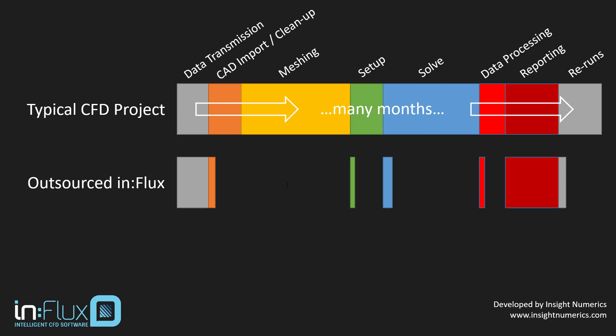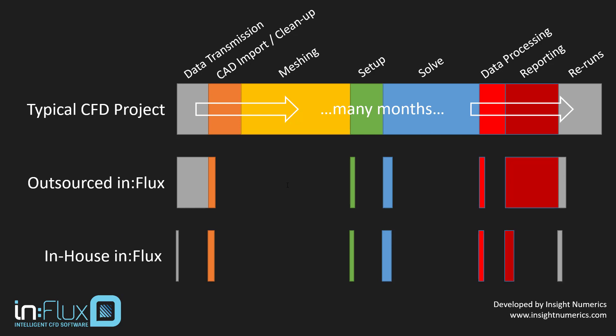But the real benefits come with using Influx in-house, because not only is the basic project done quicker, but the data transmission and reporting tasks are also less time consuming. In addition, the problem of communication between the project engineer and the CFD expert has been eliminated, because the project engineer is doing the CFD work themselves and can quickly respond to any design changes.